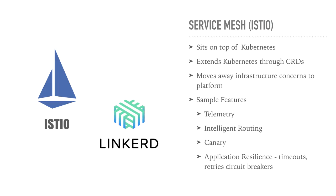For example, service A communicates with service B. If service B is not responding, service A should retry, add a circuit breaker, or add a timeout — and all of that can be achieved at the infrastructure level with service mesh. You can also inject faults to test the resilience of your application — for instance, increase the delay between one service and another and see how other systems and services respond. All of this is possible with service mesh.